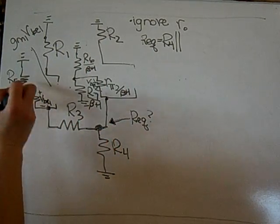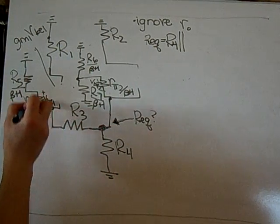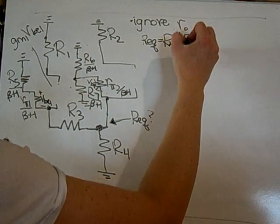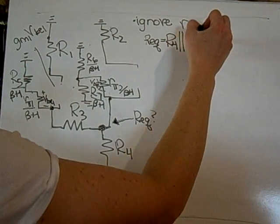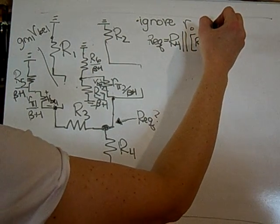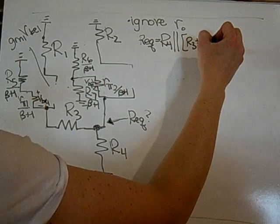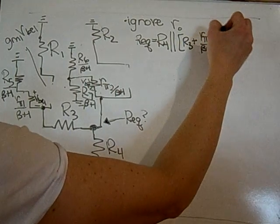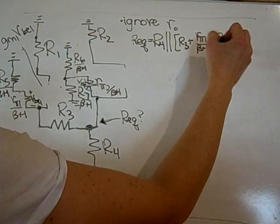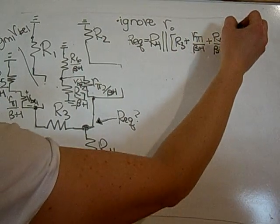That branch, as I go through it, has r3, so it's a series sum: r3 plus rpi-1 divided by (beta plus 1) plus r5 divided by (beta plus 1). And that is that branch.